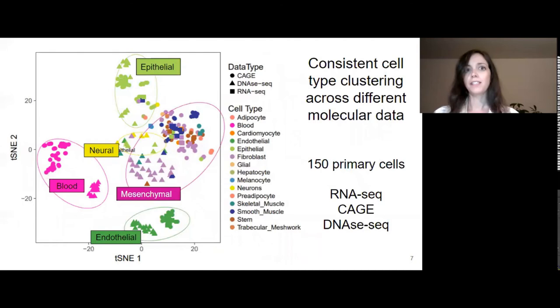So next, we wanted to confirm if this clustering is still observed at different layers of genome regulation. Here I'm showing UMAP embeddings of about 150 primary cell samples, each profiled with different combinations of RNA sequencing, CAGE, and DNase-seq. It is not straightforward to integrate these data modalities, especially chromatin accessibility and gene expression. So we find quite remarkable that cell type differences are stronger even than differences by assay. And again, we see epithelial, mesenchymal, and endothelial cell types like before, but here we also see blood and neural cells that form separate clusters. We couldn't show that before with RNA sequencing only because we didn't have the RNA sequencing data for those cells.